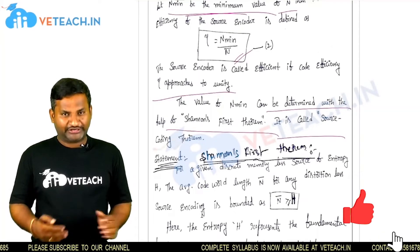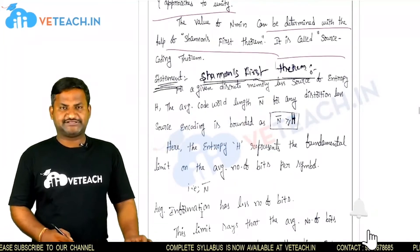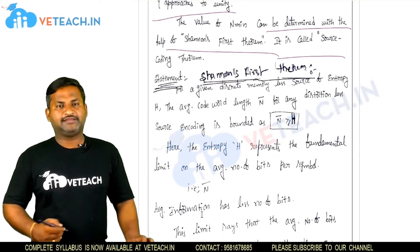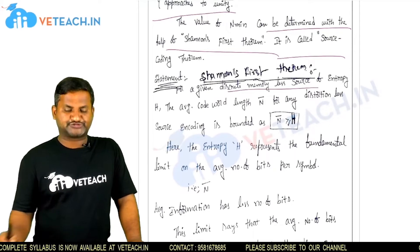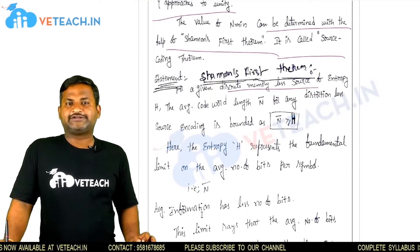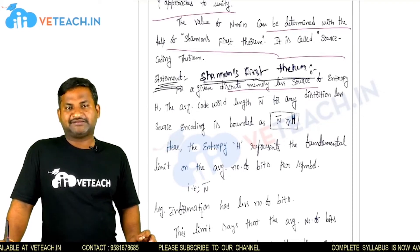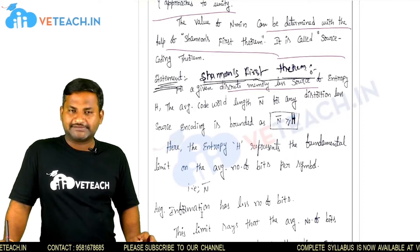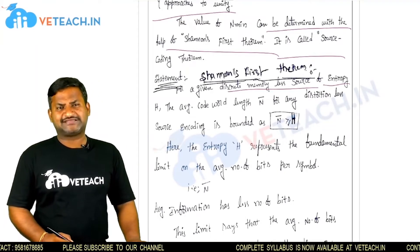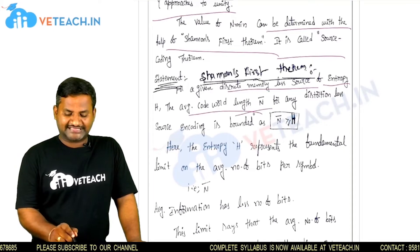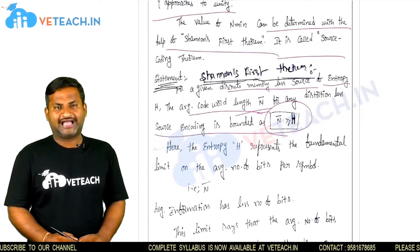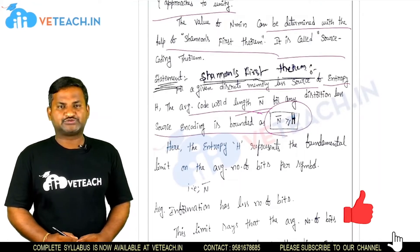Shannon's first theorem: in terms of the exam, state and explain Shannon's theorem. For a given discrete memoryless source of entropy — a discrete memoryless source is one where the present output depends only upon the present input — with source entropy capital H, which is the average information, the average code word length n-bar for any distortion-free code satisfies: n-bar is greater than or equal to H. That is, the average code word length is always greater than or equal to the entropy. The entropy H represents the fundamental limit on the average number of bits per symbol.